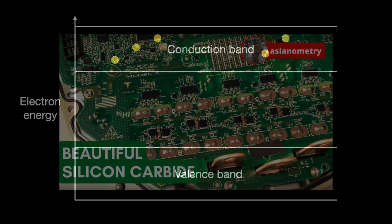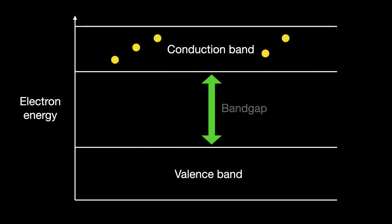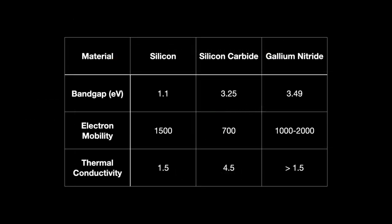All materials have a bandgap — the energy buffer before their electrons jump out of the valence band into the conduction band. A wide bandgap material is referred to as such because their buffer is bigger than silicon's. GaN's bandgap is 3.49 electron volts, which is higher than silicon carbide's 3.25 electron volts and far higher than silicon's 1.1. It also conducts heat very well, giving the material high heat and voltage tolerances.